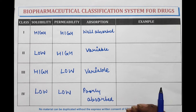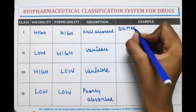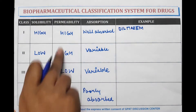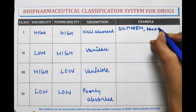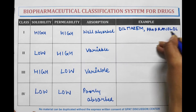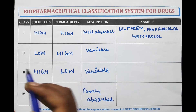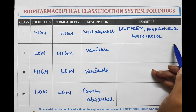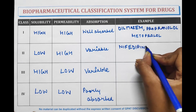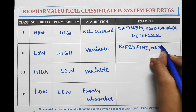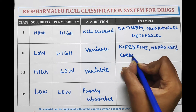Now, the examples of drugs belonging to these classes. Class one drugs: diltiazem, propranolol, and metoprolol. Class two drugs: nifedipine, naproxen, and carbamazepine. It is very important to remember the class type, solubility, permeability, and their examples.